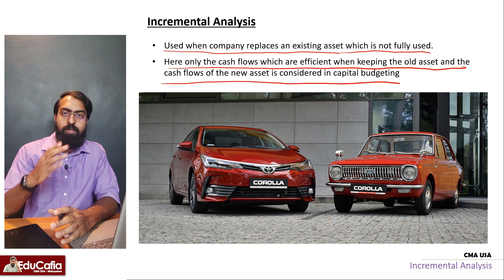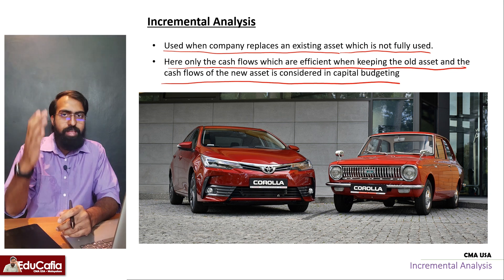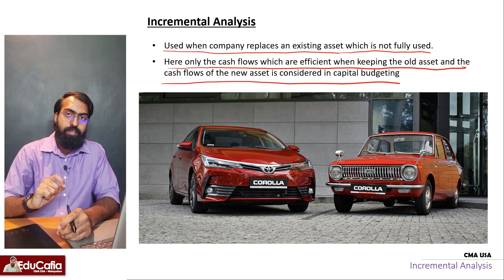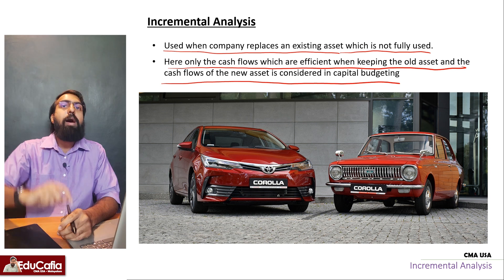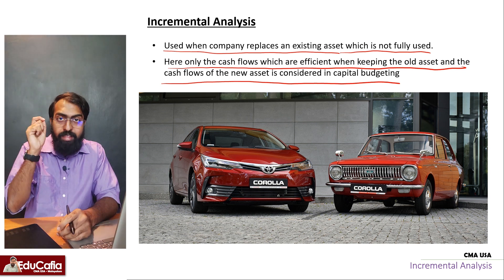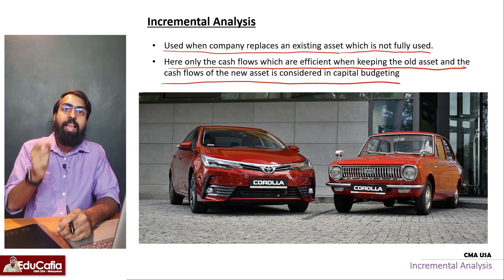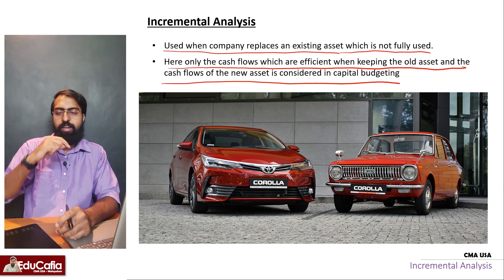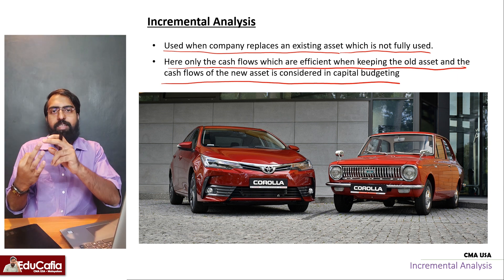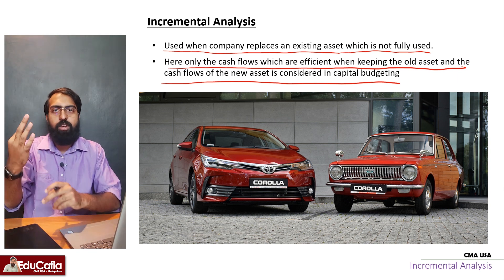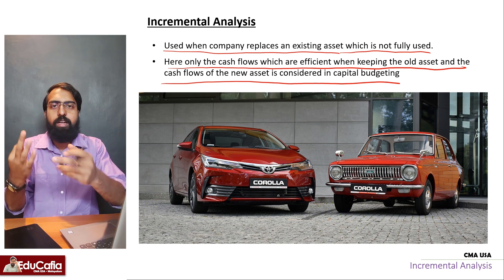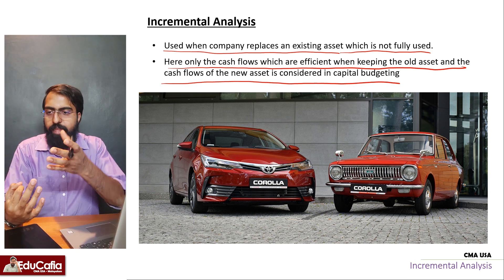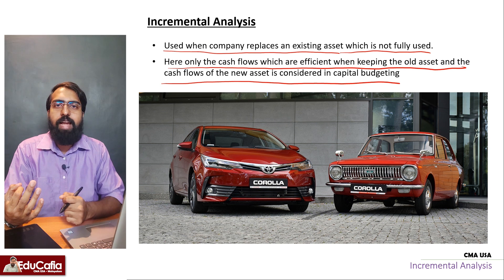Now, we need to consider the capital budgeting. We need to consider all the cash flow. The new machine price is high. There are other things like this. If you have to get the new machine, we can take the machine and create operational cash flow. That's why we can take the depreciation tax shield.